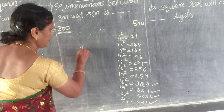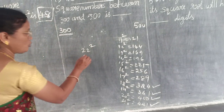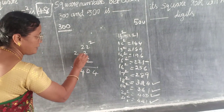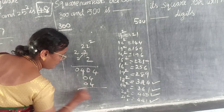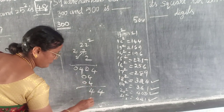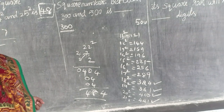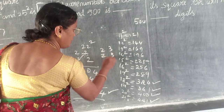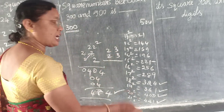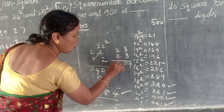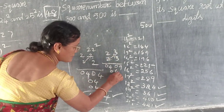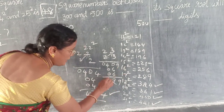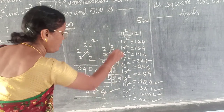One more number will be taken — 22. 22² is 484. Understand? And 23² — 3 nines are 9, carry 6 plus 6 is 12, remainder 1, so 529. So 23² exceeds 500 — you should not take it.